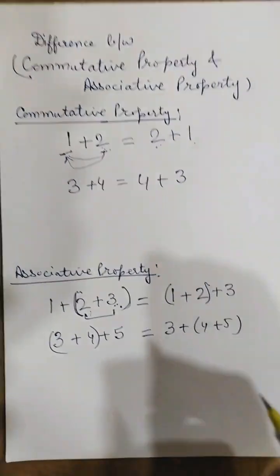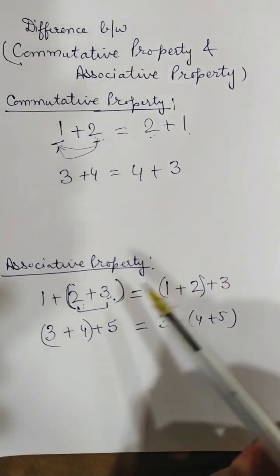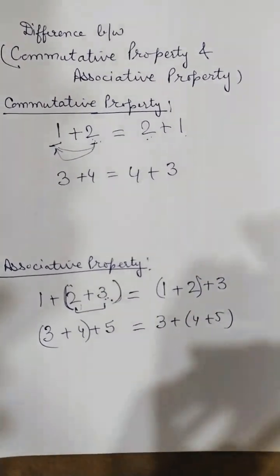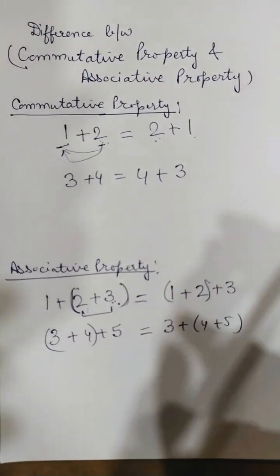But if you come across a case where the seats are also changed and the grouping is also changed, then in that case both commutative and associative property are applied.